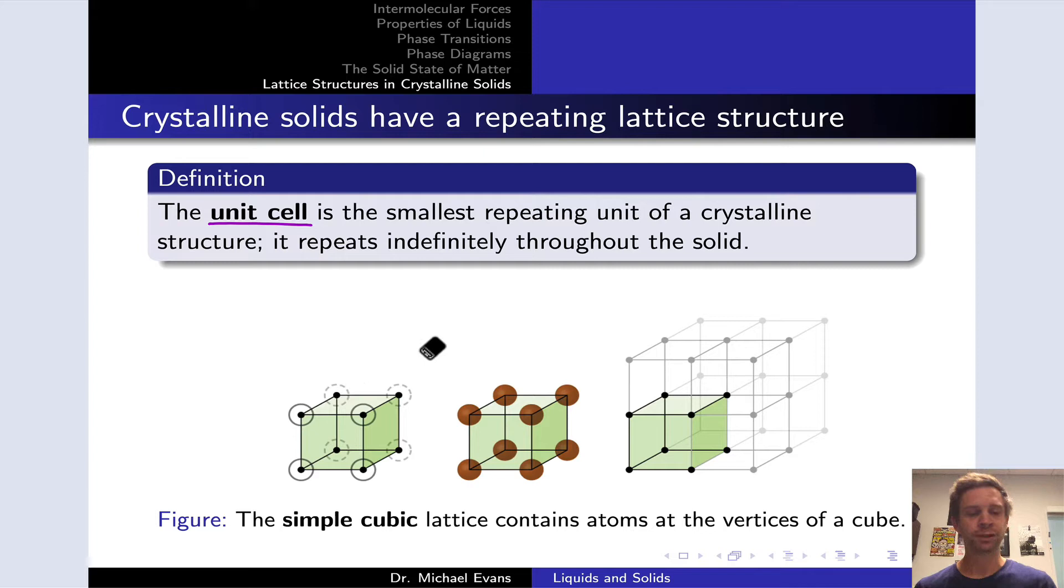So the simple cubic lattice is one example of a crystalline lattice, and this repeats on and on almost forever, of course, until we hit the actual boundary of the physical material. This simple cubic lattice simply consists of atoms or molecules sitting on the vertices of a cube. The black dots you see, the brown spheres here, these are the lattice points of the simple cubic lattice where atoms are sitting.